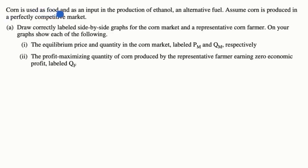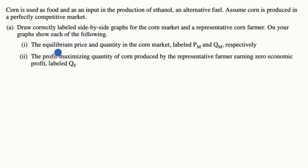We're told corn is used as food and as an input in the production of ethanol, an alternative fuel. Assume corn is produced in a perfectly competitive market. Draw correctly labeled side-by-side graphs for the corn market and a representative corn farmer. Show the equilibrium price and quantity in the corn market, labeled P sub M and Q sub M respectively, and the profit-maximizing quantity of corn produced by the representative farmer earning zero economic profit, labeled Q sub F.